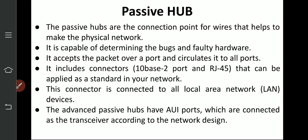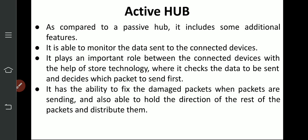RJ45 is the standard connector. Advanced passive hubs use AUI ports. Generally RJ45 ports are used, but AUI ports are also used in passive hubs. Active hub, compared to passive hub, includes some additional features. Passive hub is used for physical connection and to expand the network. Active hub is able to monitor the data sent to the connected devices. It plays an important role using store-and-forward technology, where it checks the data to be sent and decides which packet to send first.